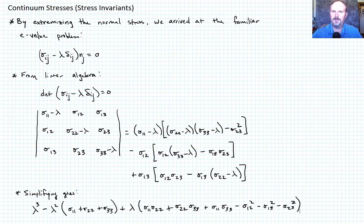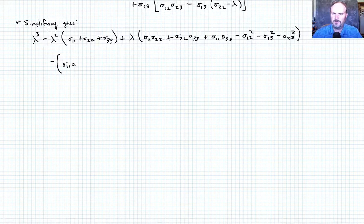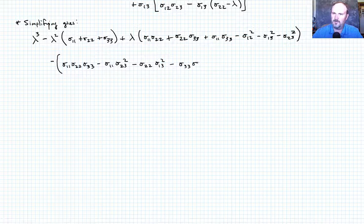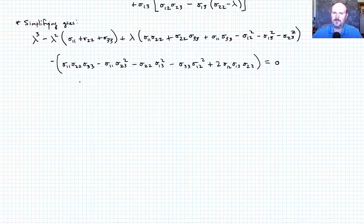There is one more term: minus (sigma_11 sigma_22 sigma_33 minus sigma_11 sigma_23 squared minus sigma_22 sigma_13 squared minus sigma_33 sigma_12 squared plus 2 sigma_12 sigma_13 sigma_23). I encourage you to go back and check that you get the same answer. Remember, that whole thing equals zero. This equation is commonly referred to as the characteristic equation.